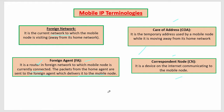Care of Address is the temporary address assigned to the mobile node when it is connected to the foreign agent, which shows the current position of the mobile node. Correspondence Node is a device on the internet communicating with the mobile node — when someone sends a message to us, we receive it from the correspondence node. That is all about Mobile IP terminology.